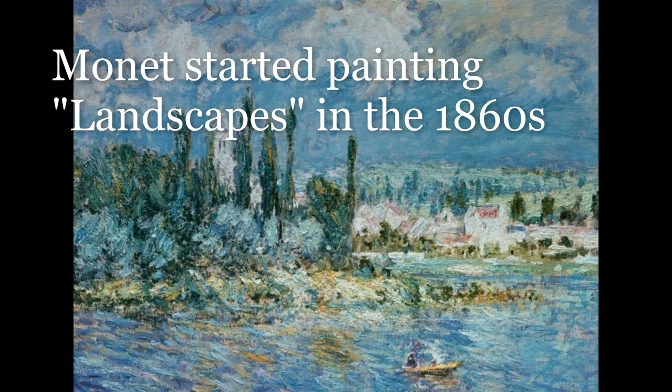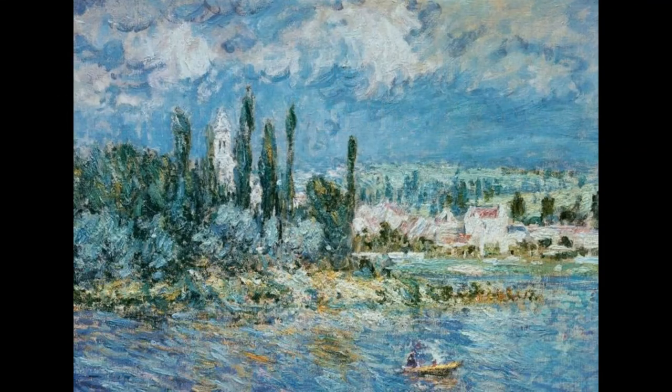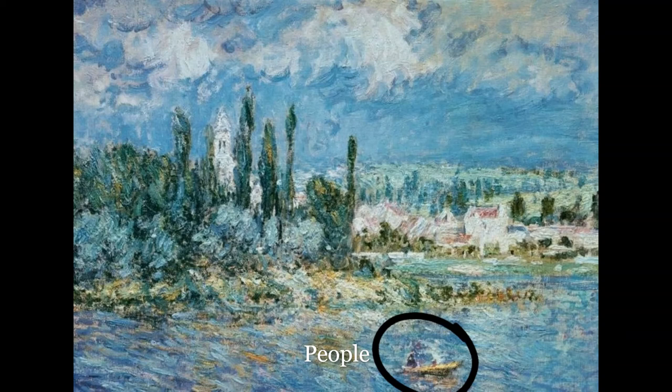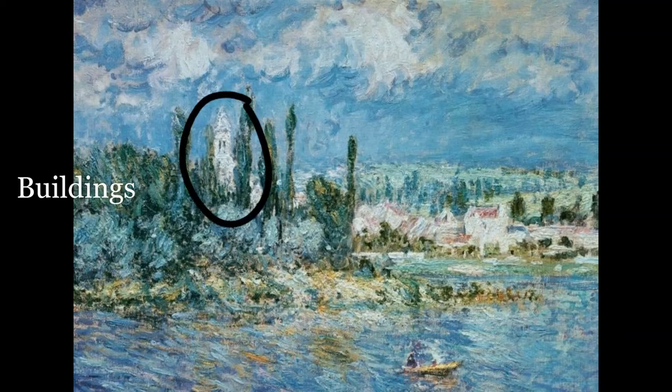In the 1860s, Monet began to paint Impressionist landscapes. A landscape is a picture of trees, a person, or a building that is outside.